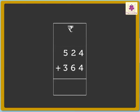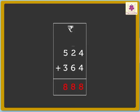Let us add the rupees. 4 plus 4 is equal to 8. 2 plus 6 is equal to 8. 5 plus 3 is equal to 8. So, the total is 888 rupees.